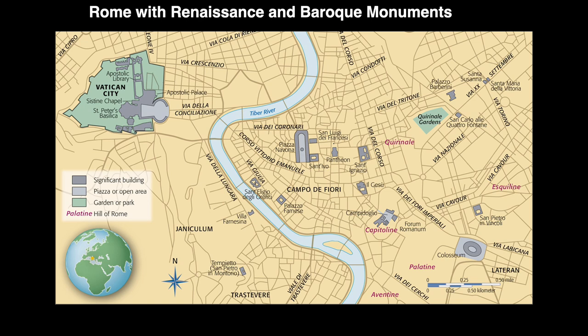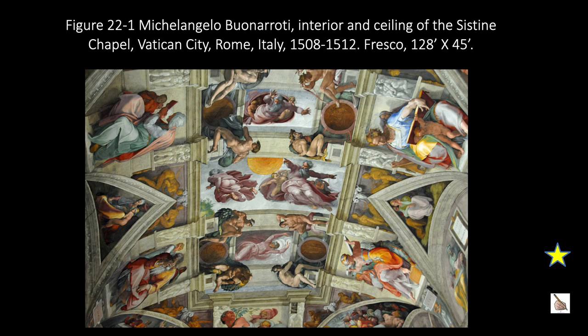Our first stop will be Vatican City where we will look at the Sistine Chapel. Michelangelo's interior and ceiling of the Sistine Chapel — Pope Julius II commissioned the frescoes in 1508. The subjects include Old Testament scenes from the Bible and it has over 300 figures.